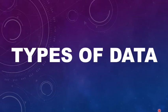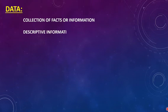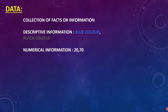Hey guys, welcome back to my channel. Today we will be discussing the types of data or types of statistical data. Before this, we should be familiar with a few terms. The first one is data — it is the collection of facts or information. Data can give descriptive information, for example blue color, black color, etc., or can give numerical information like 20, 70, etc.